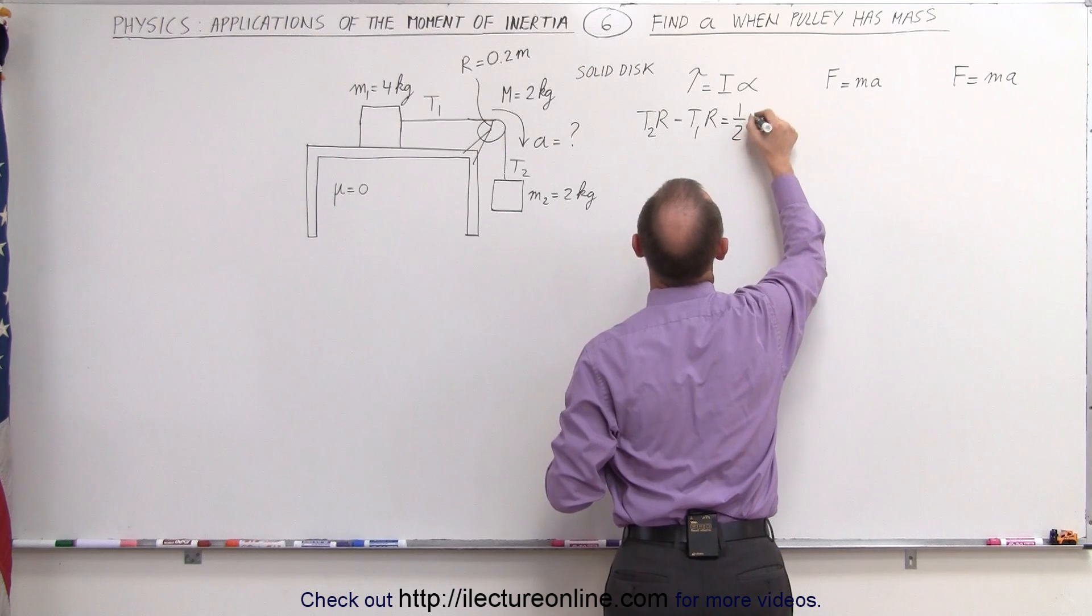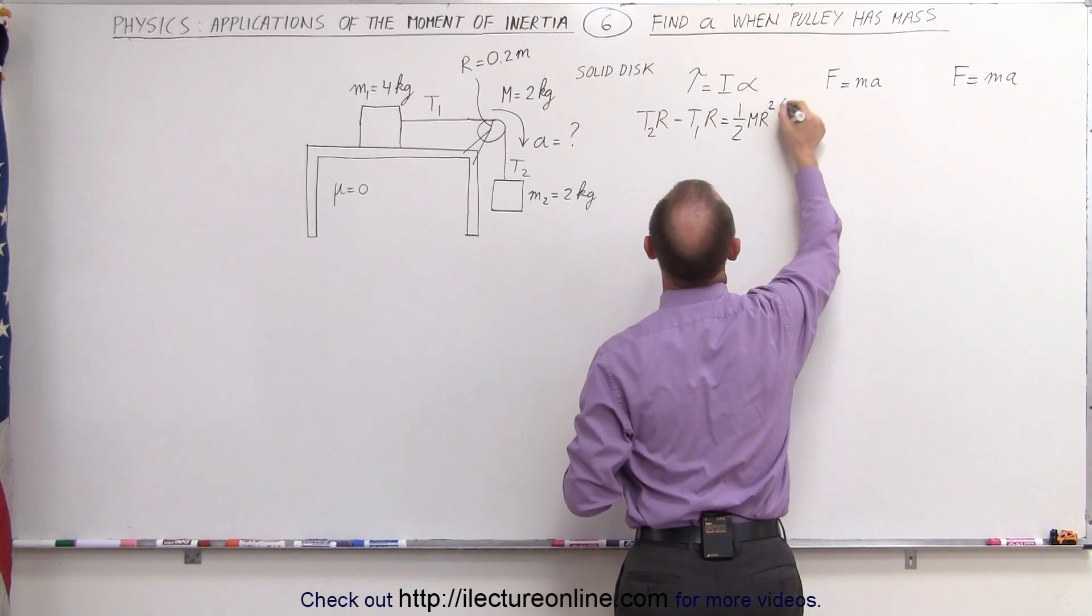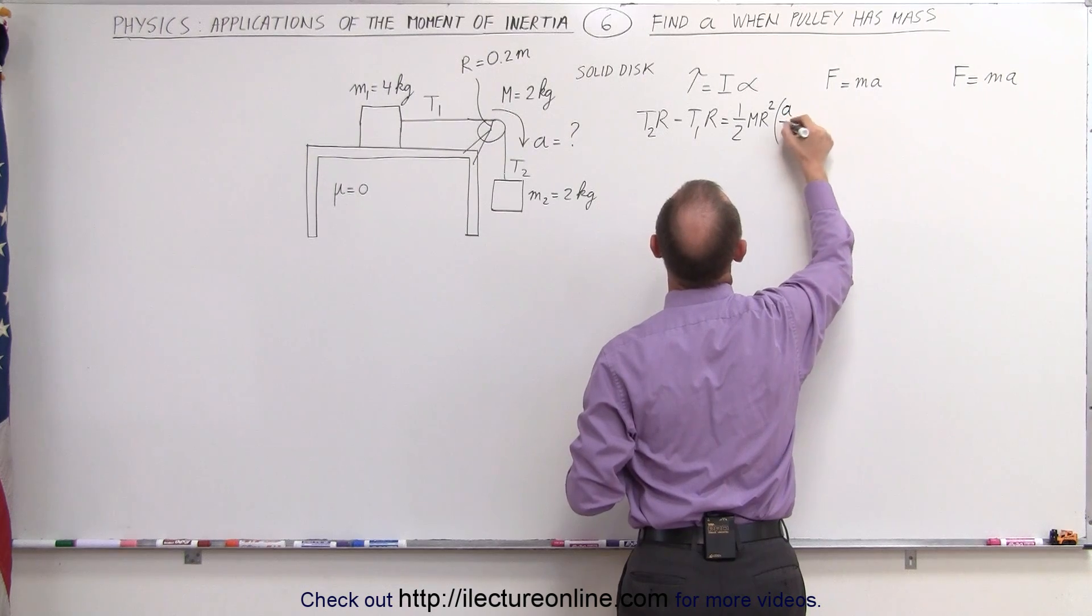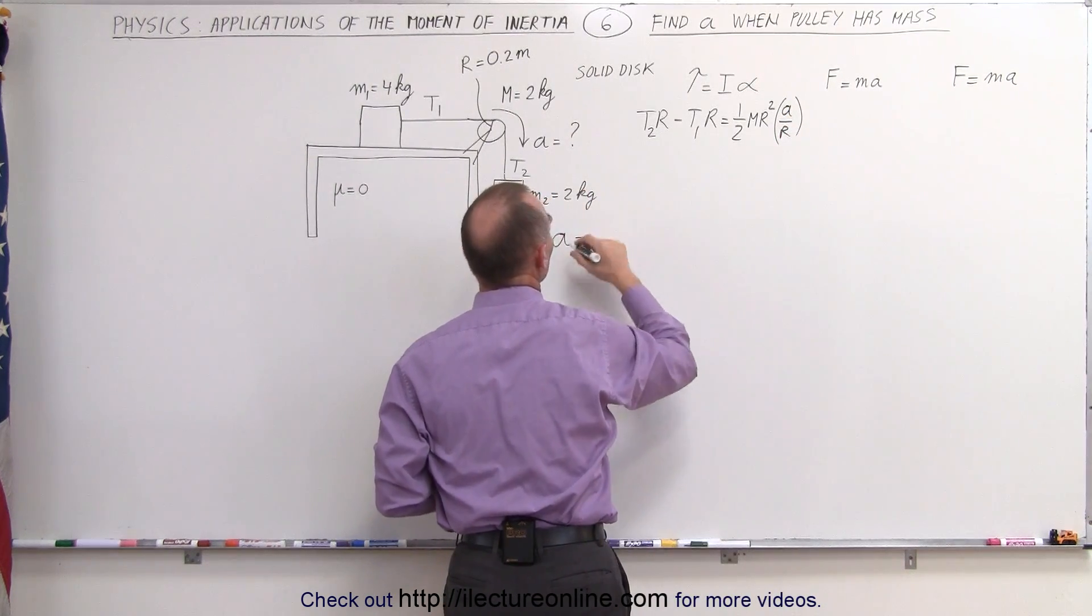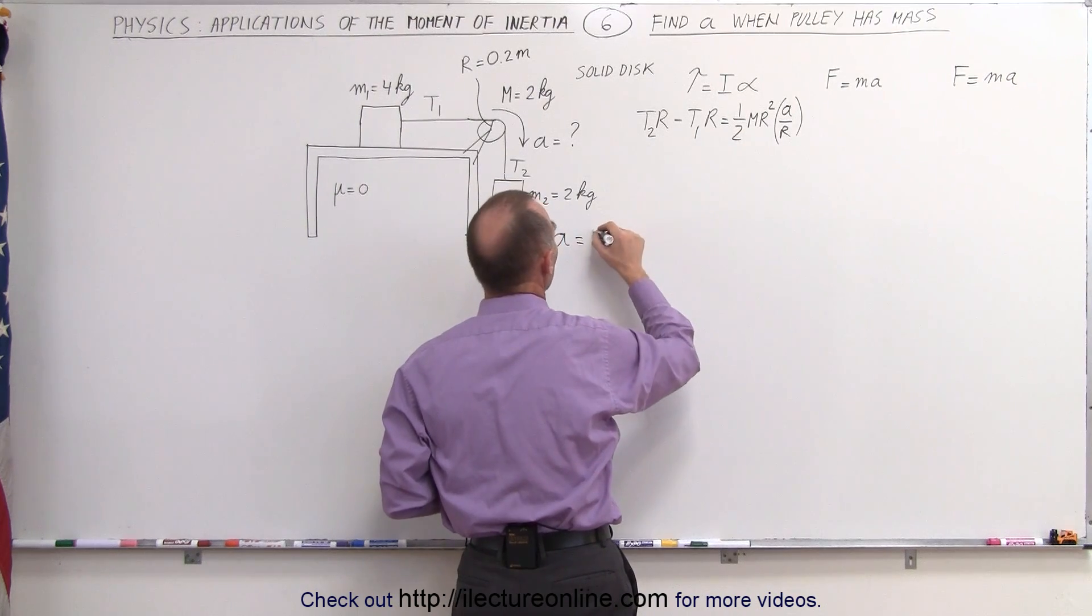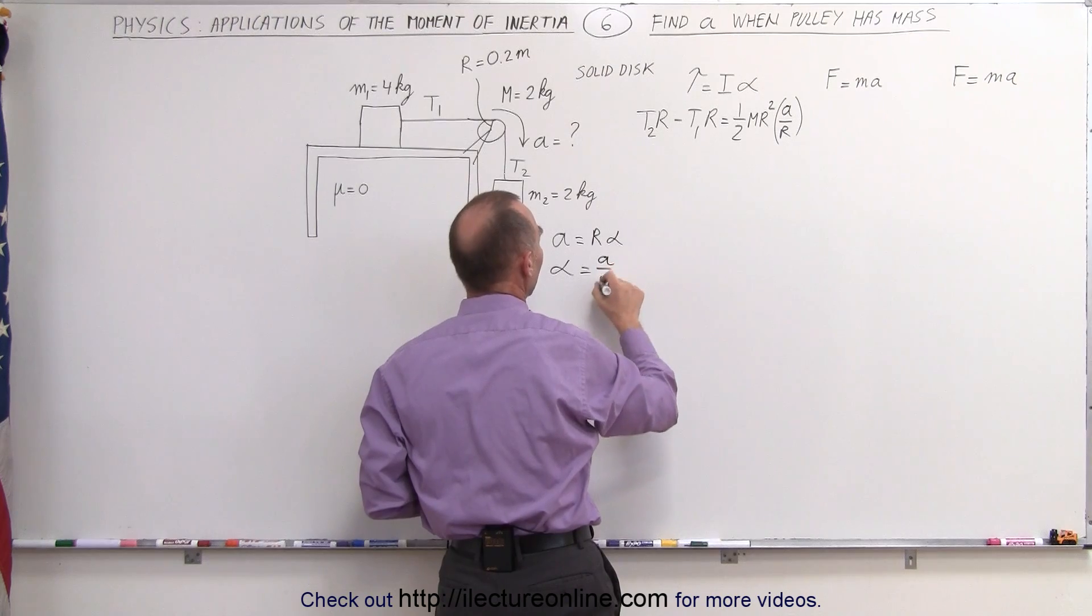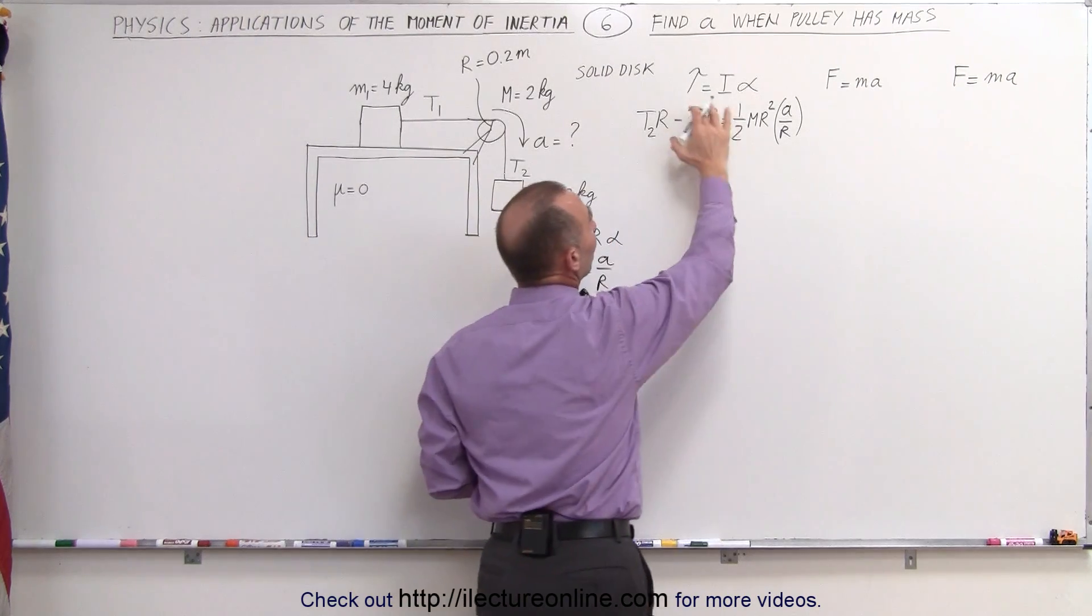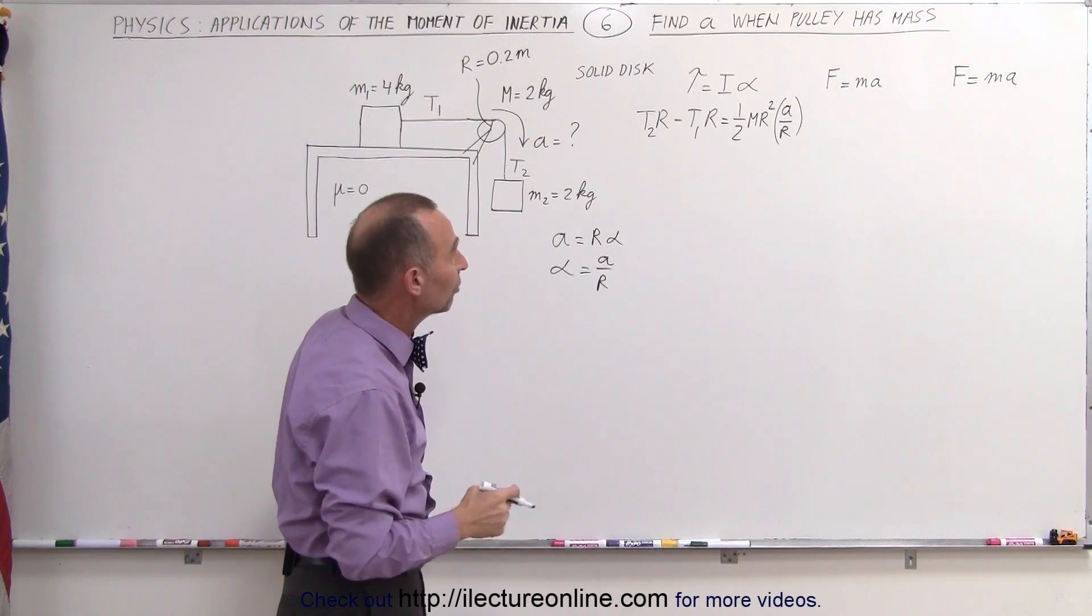This equals the moment of inertia of the pulley, which would be one-half the mass times the radius squared, times the angular acceleration, which can be written as A divided by R. Remember that the linear acceleration is related to the angular acceleration by the equation R times alpha, which means alpha is equal to A divided by R. This now becomes the equation for the rotational motion of the pulley and the rotational acceleration.